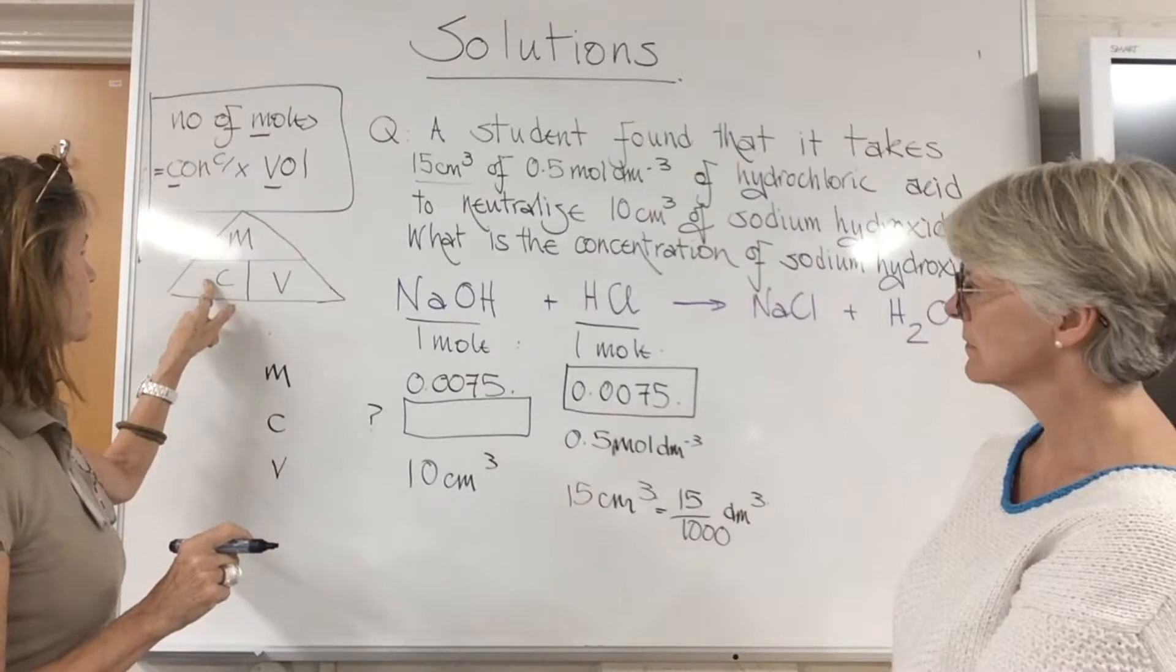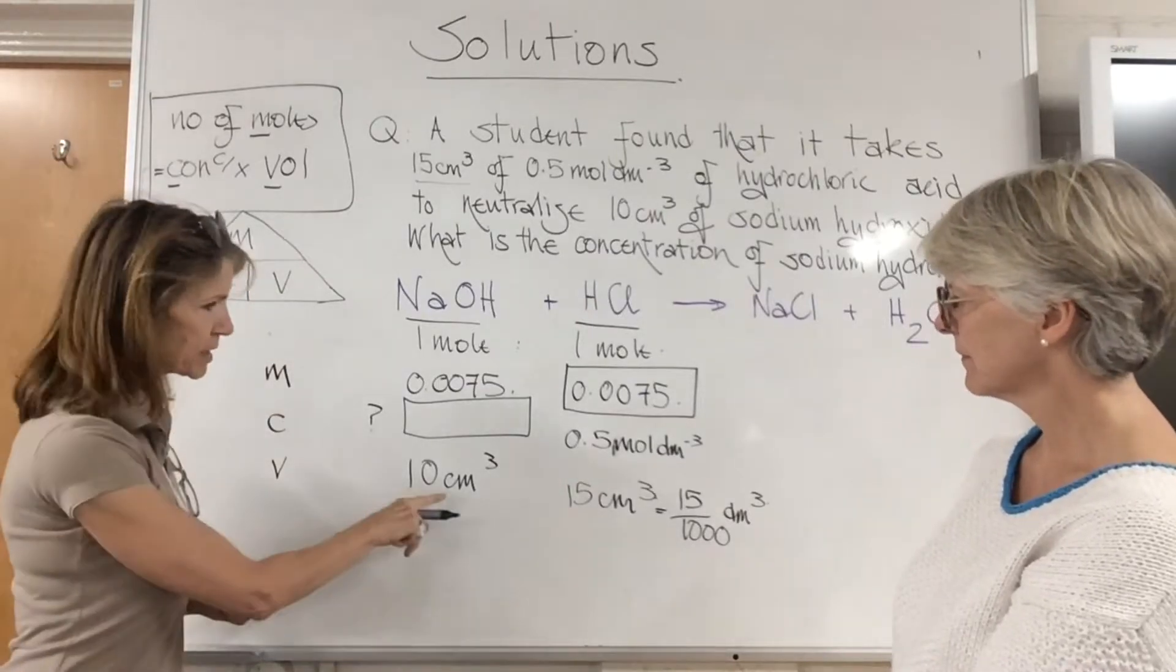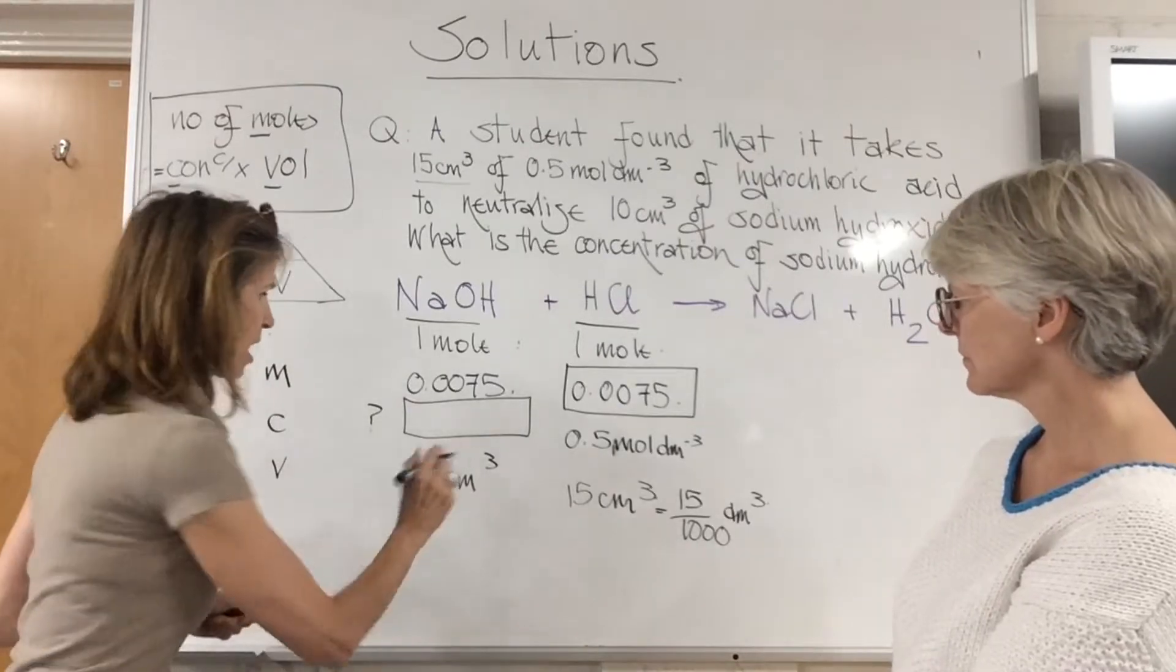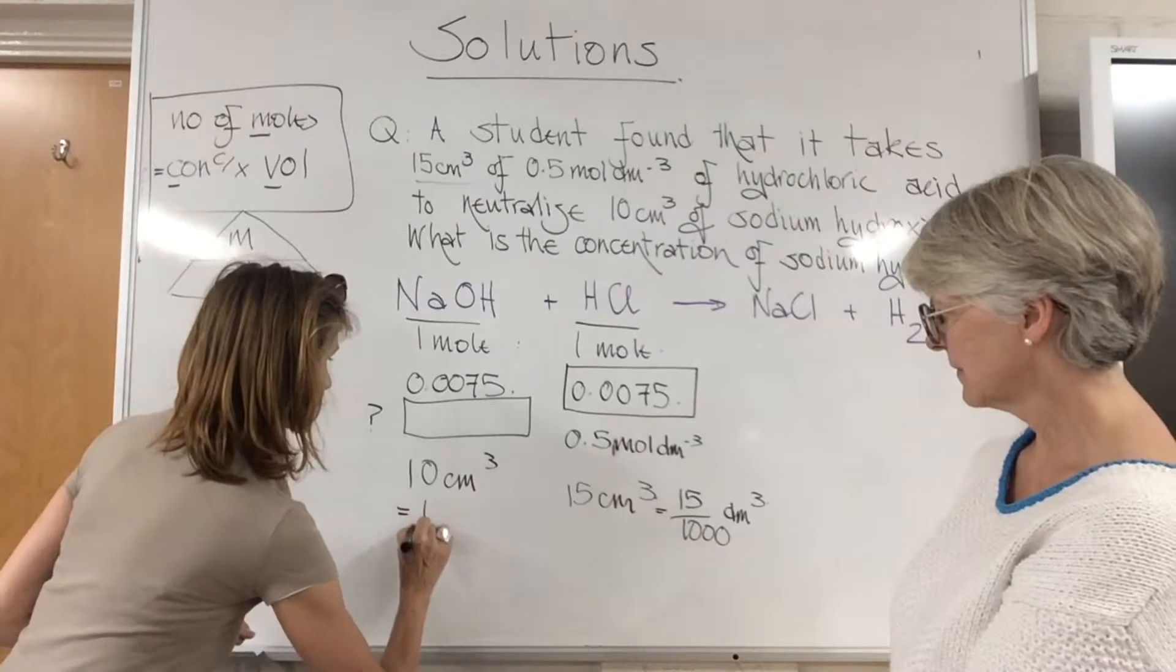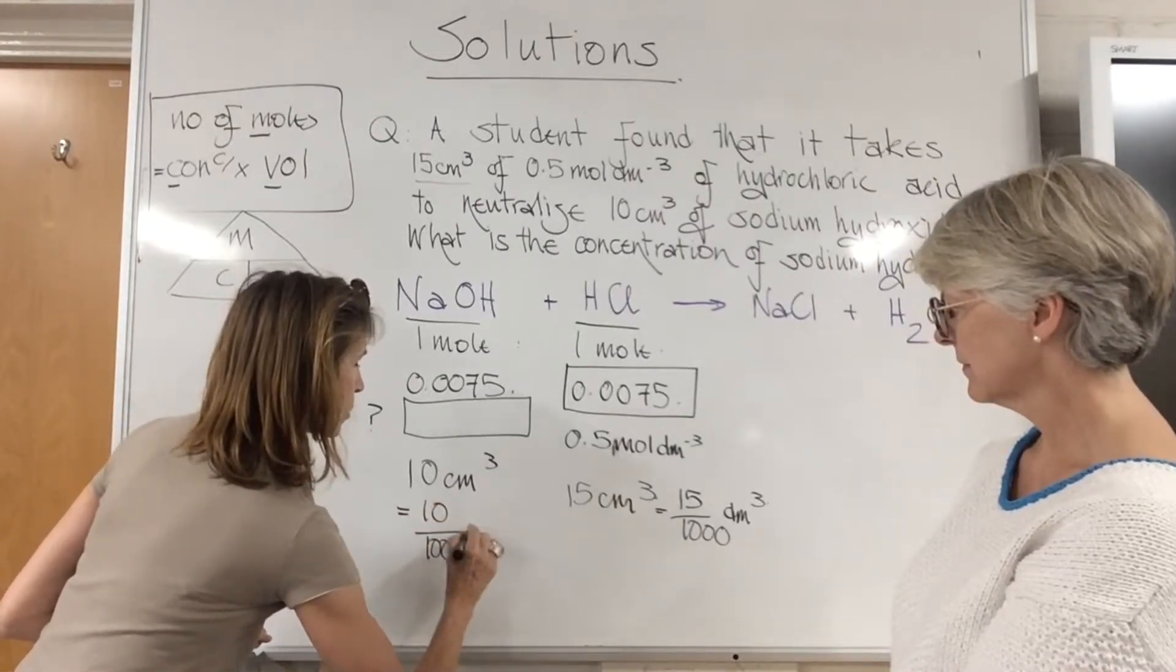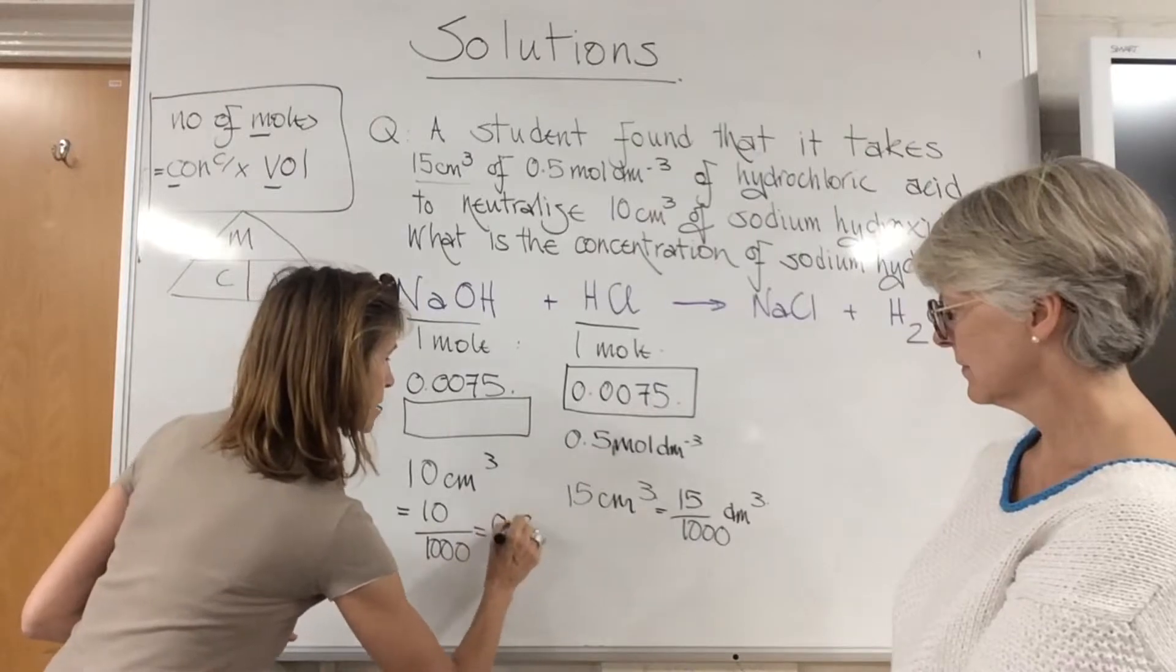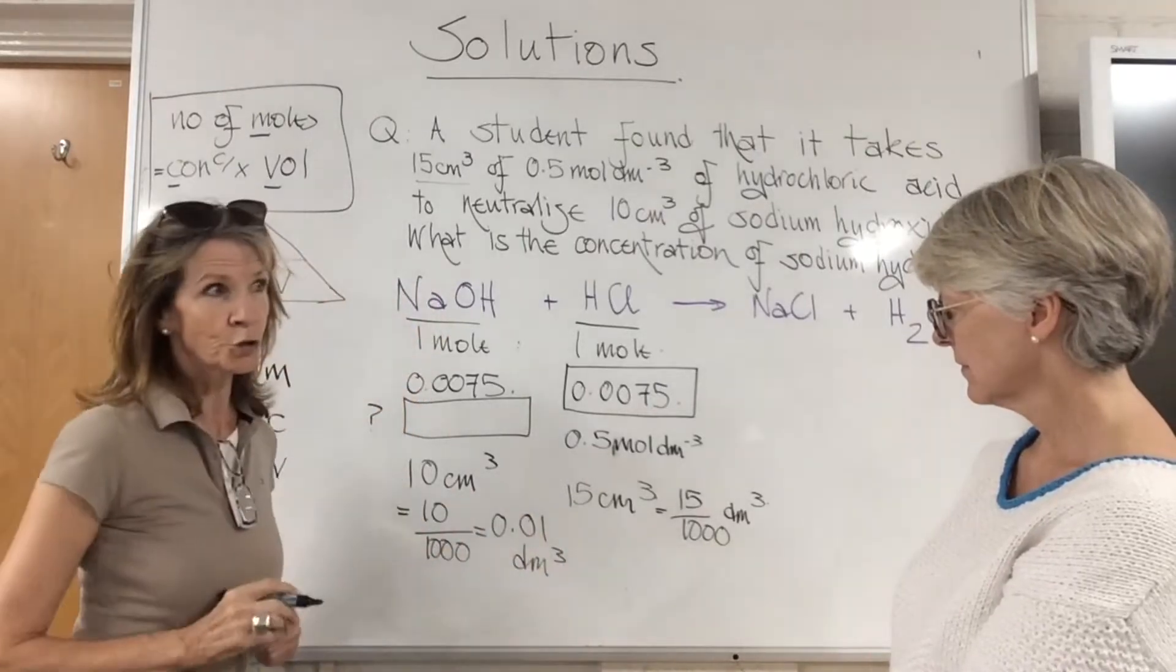Which is 10 cm³. So what do you have to do with that? If you look at our triangle, concentration is equal to moles divided by volume. The volume is in cm³, so again I have to divide that by a thousand. Let's put 10 divided by a thousand, and if I work that out that gives me 0.01 dm³.